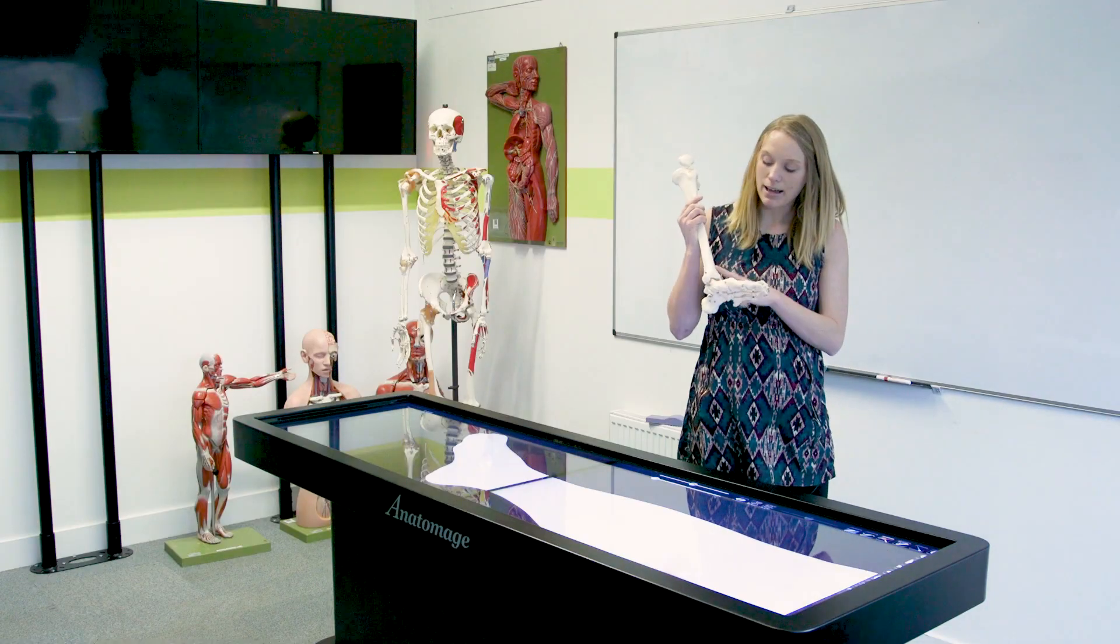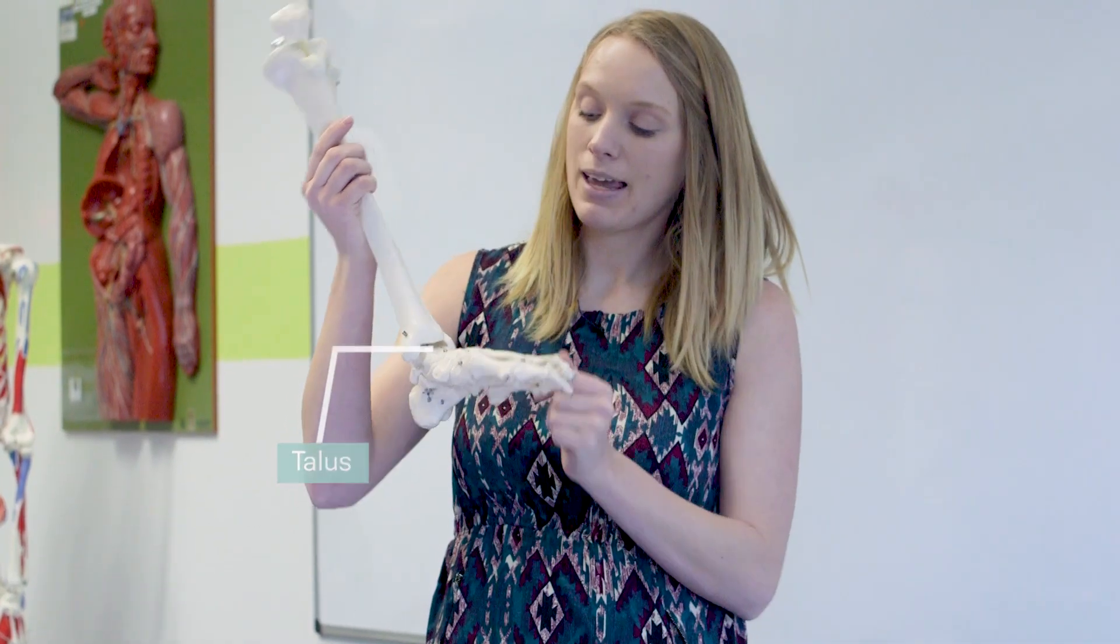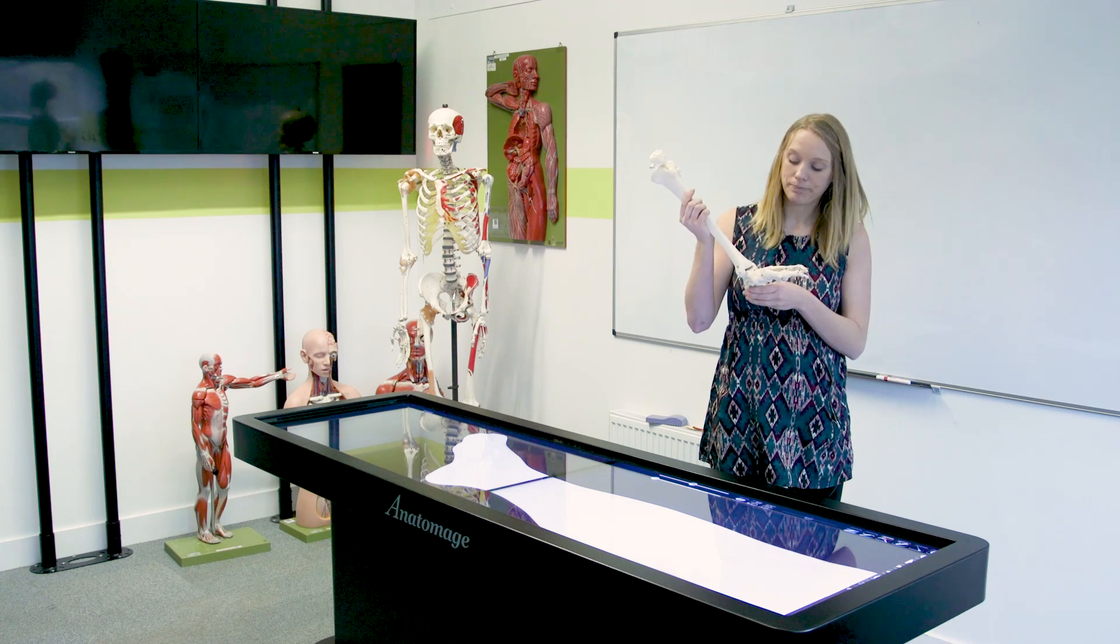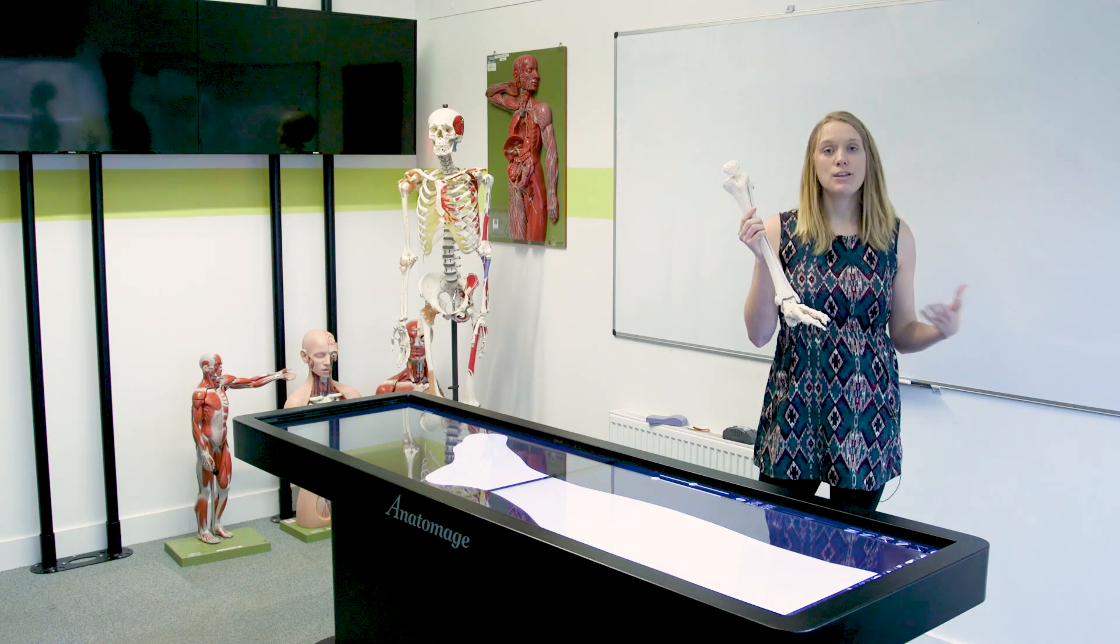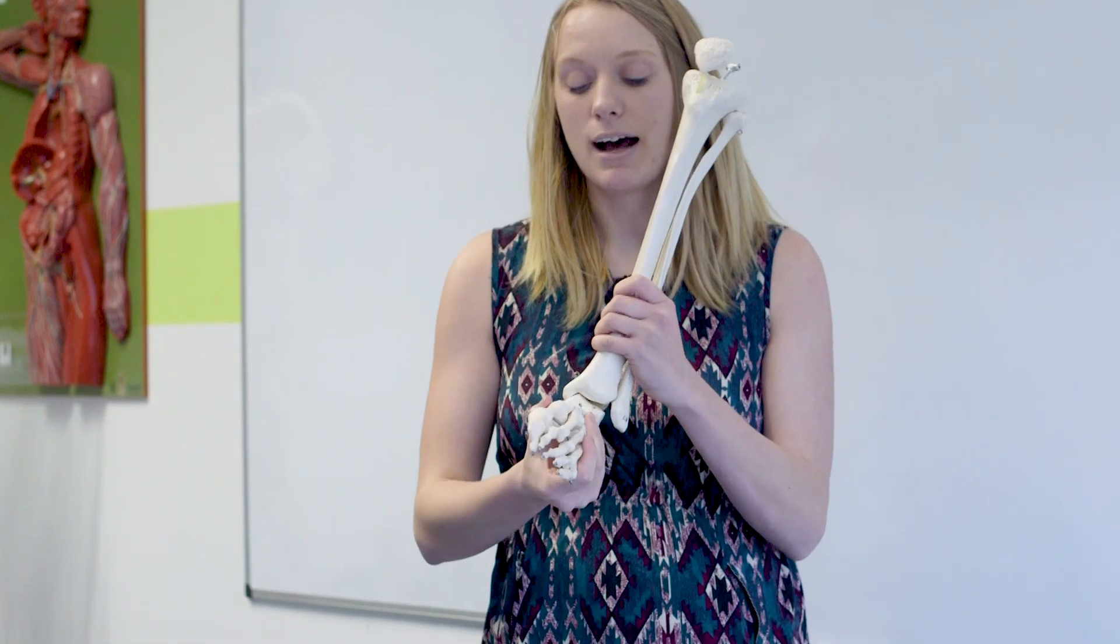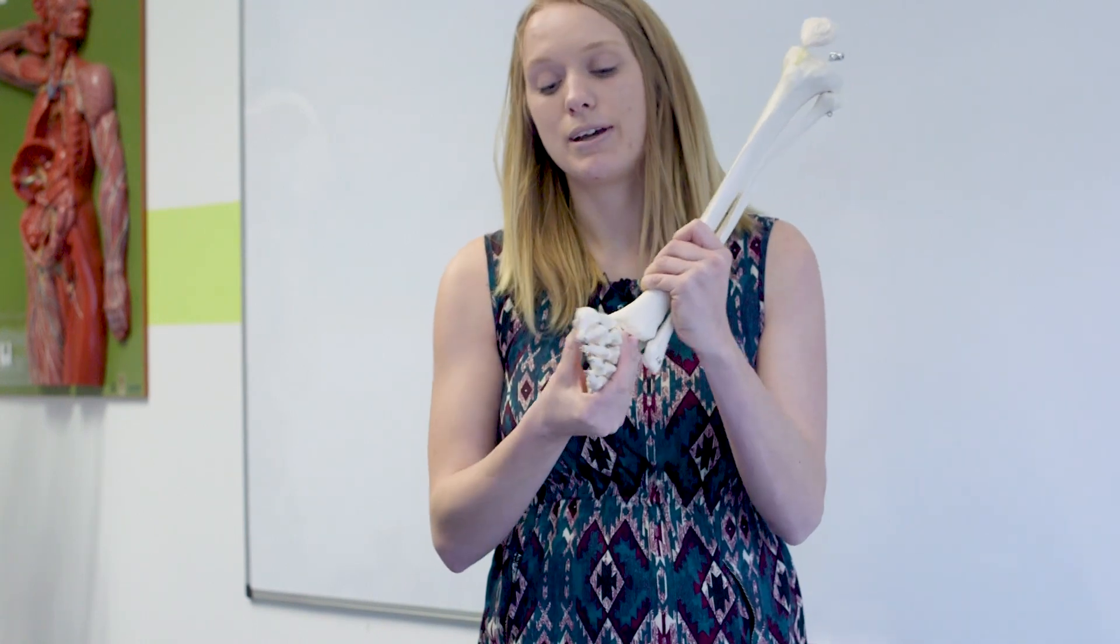Now the tibia articulates with this bone here, and this is called the talus bone, and they're the two bones that make up the main joint of the ankle. Now when you sprain your ankle in most cases you'll fall on the outside of your foot like this. So the bottom of your foot will kind of invert like that. This is called inversion.